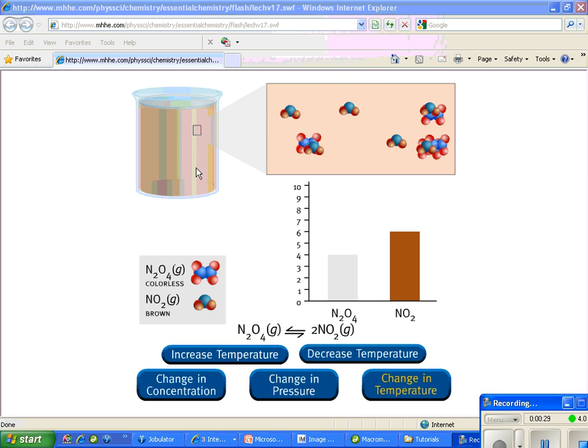As these guys go back and forth, the color here will change. When the nitrogen dioxide goes up, it will get darker. When it comes down and this one goes up that way, it will become lighter color.